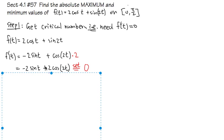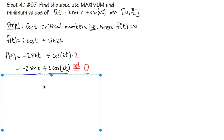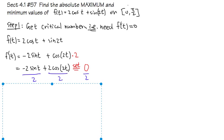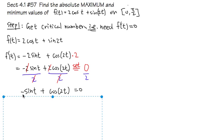This gives us the derivative: -2sin(t) + 2cos(2t). We set this equal to 0. Since both terms have a factor of 2, we divide everything by 2. This cancels the 2s, giving us the simplified equation: -sin(t) + cos(2t) = 0.